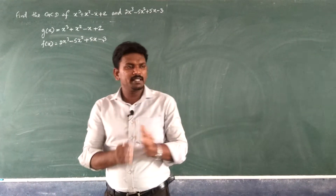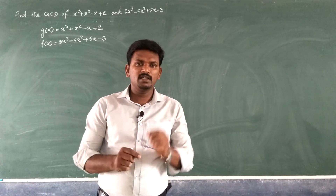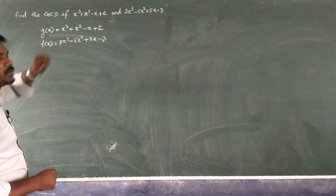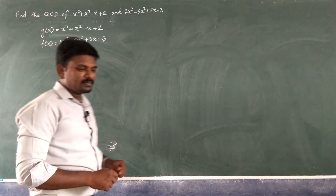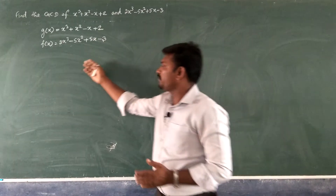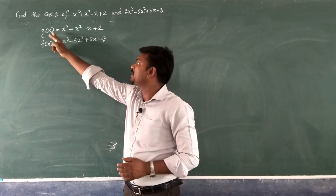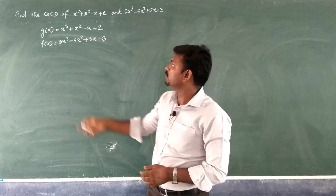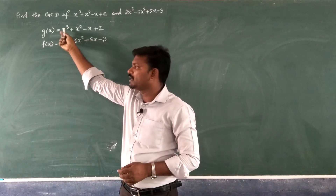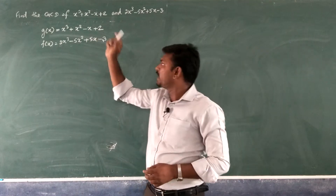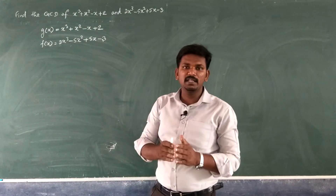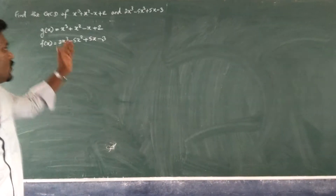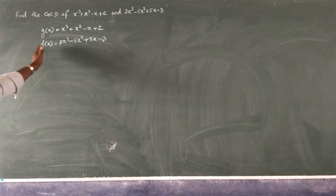When you find the GCD of a polynomial, the first thing you have to check is the degree of the polynomial. The degree means the highest power of the variable. The degree of g(x) is 3, and in f(x) the highest power of the variable is also 3, so they have equal degree.